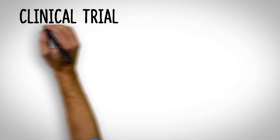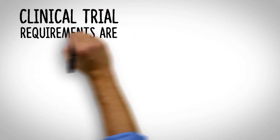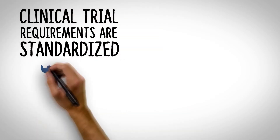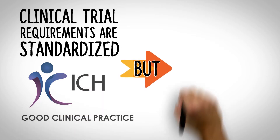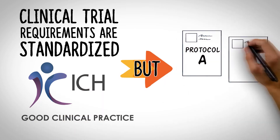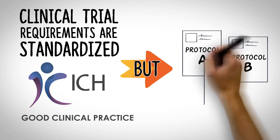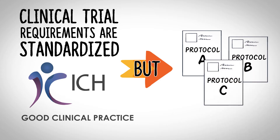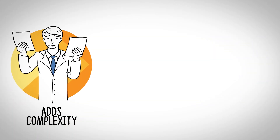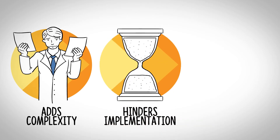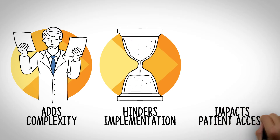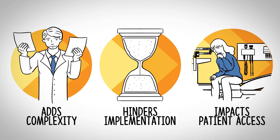Though requirements for the conduct of clinical trials are largely standardized by the ICH GCP, a great deal of variation in terms of protocol structure can make it hard for investigators to find key content, adding complexity to the process, hindering the startup, implementation and reporting of clinical trials, and ultimately impacting patient access to new medicines.